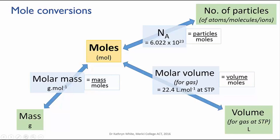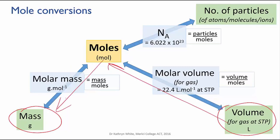For instance, if we need to convert between the mass of something and the number of particles in it, we would first convert from mass to moles and then from moles to particles. If we needed to convert from the volume of a gas at STP to its mass, we would first convert from volume to moles and then from moles to mass.